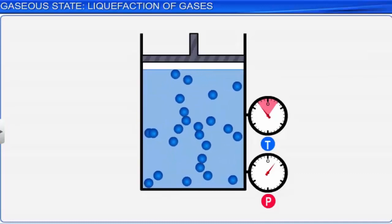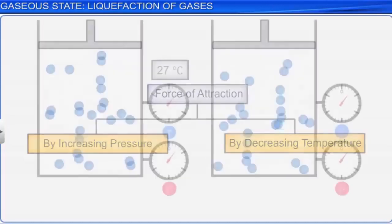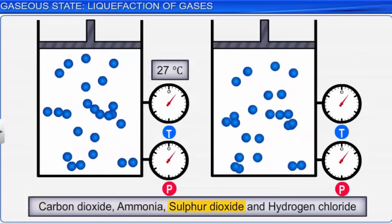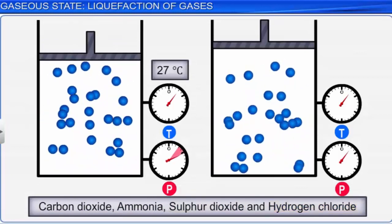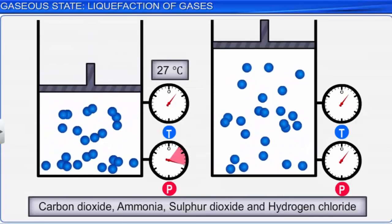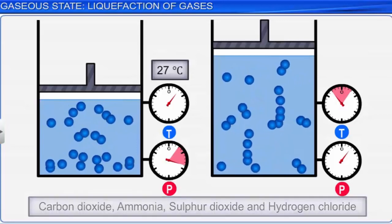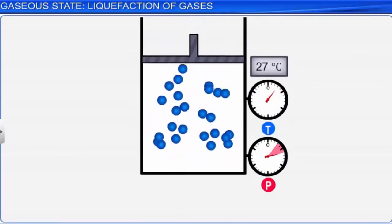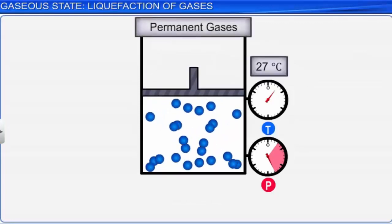Sometimes we need to use a combination of both methods to liquefy a gas. For example, carbon dioxide, ammonia, sulfur dioxide, and hydrogen chloride can be liquefied either by increasing the pressure or by decreasing the temperature. However, there are some gases which cannot be liquefied at room temperature even at very high pressure. These gases are called permanent gases. Hydrogen, helium, and oxygen are examples of permanent gases.